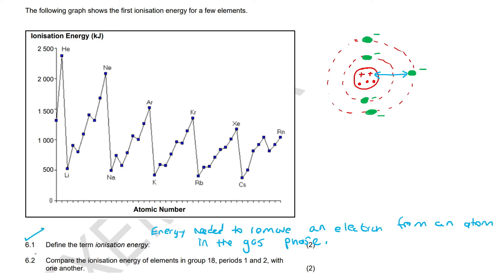So that's this question. This question: compare the ionization energy of elements in group number 18, periods number one and number two. So let's go grab an electronic periodic table.